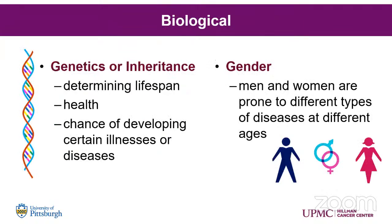Biologically, when we talk about biological determinants, you think about genetics or inheritance. These generally are not things that can change. They will impact one's lifespan very often, one's general health, and one's chance of developing certain illnesses or diseases — such as a predisposition to high blood pressure, diabetes, or some types of cancers. Gender also comes into play, as men and women are prone to different diseases at different ages throughout their lifespan.